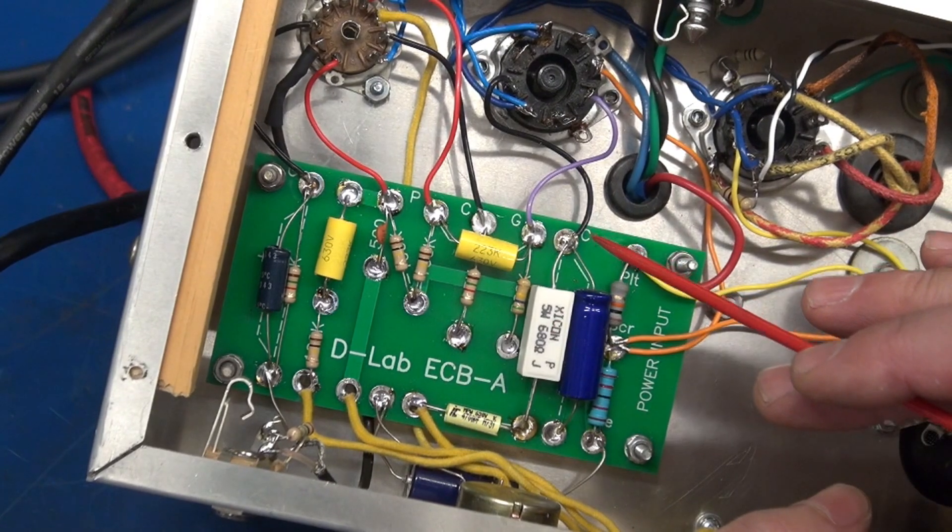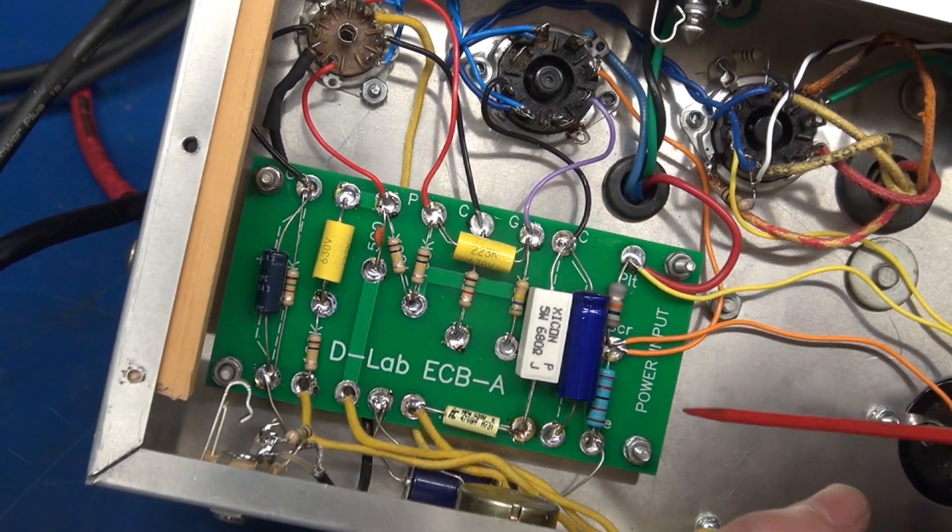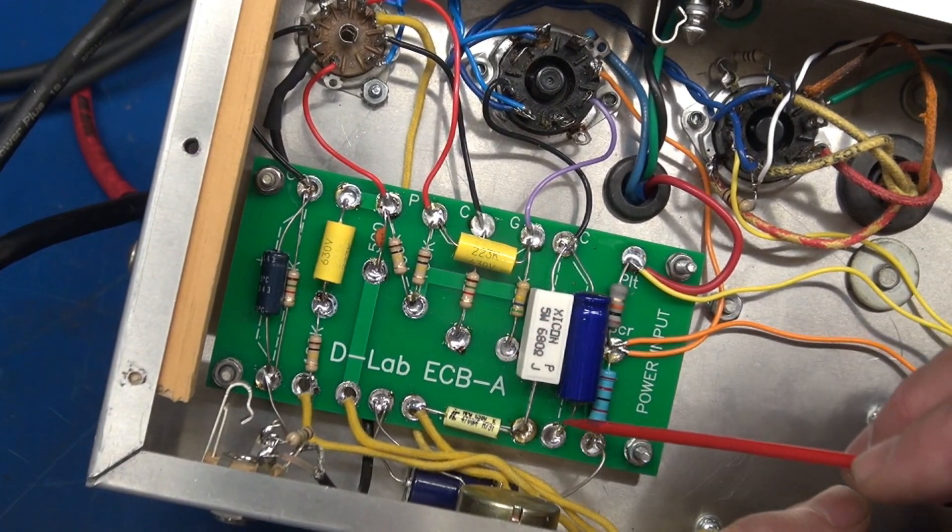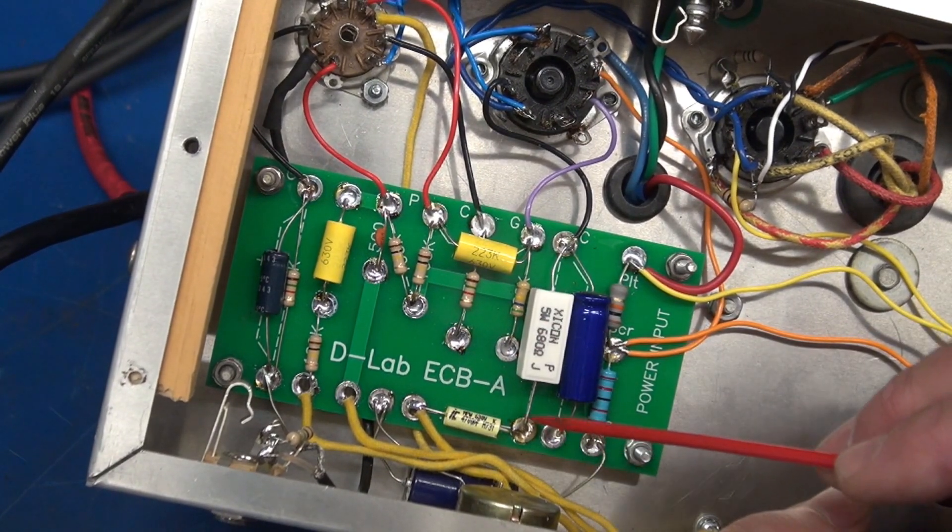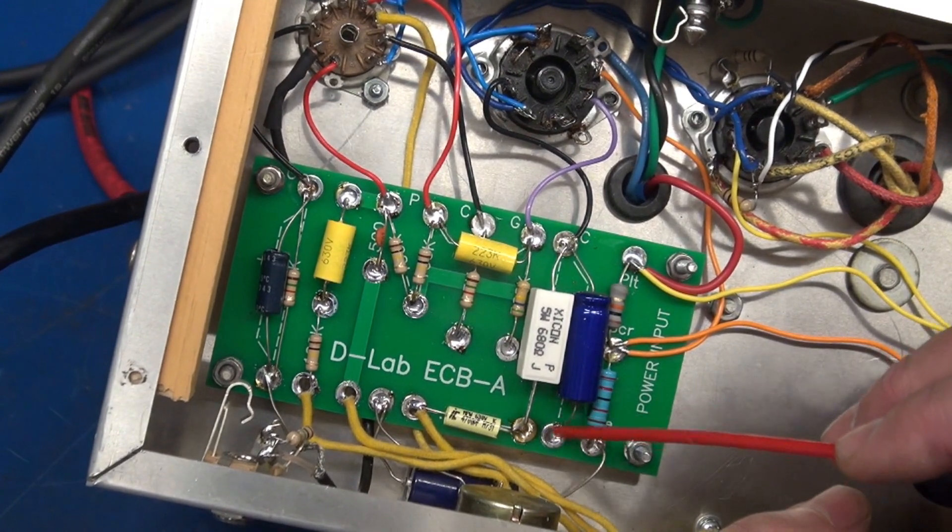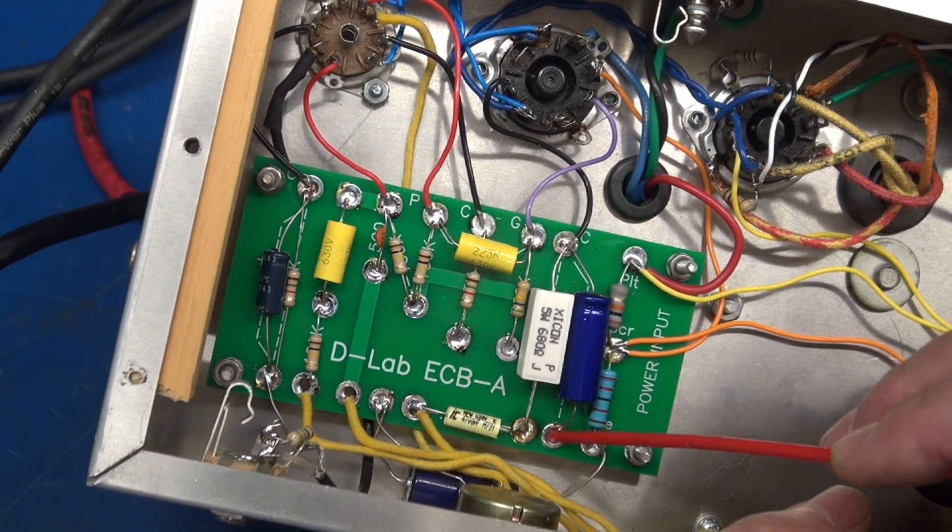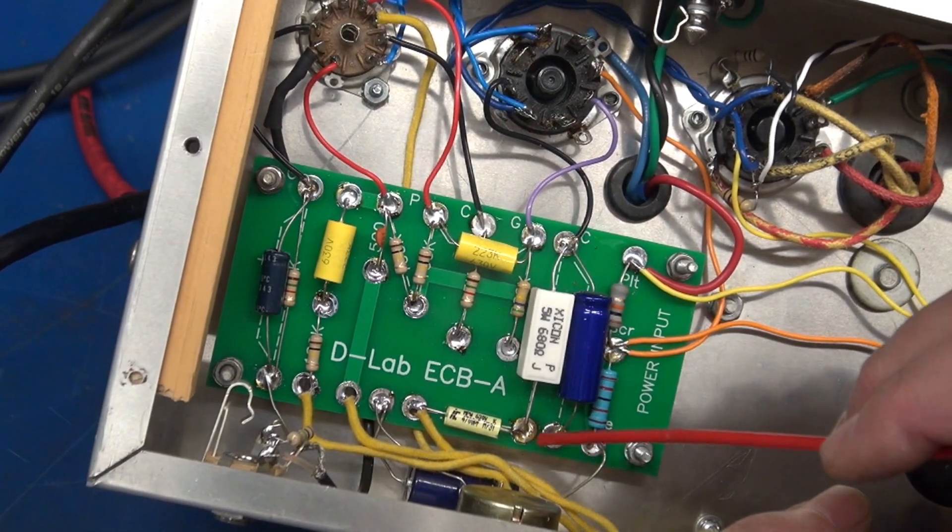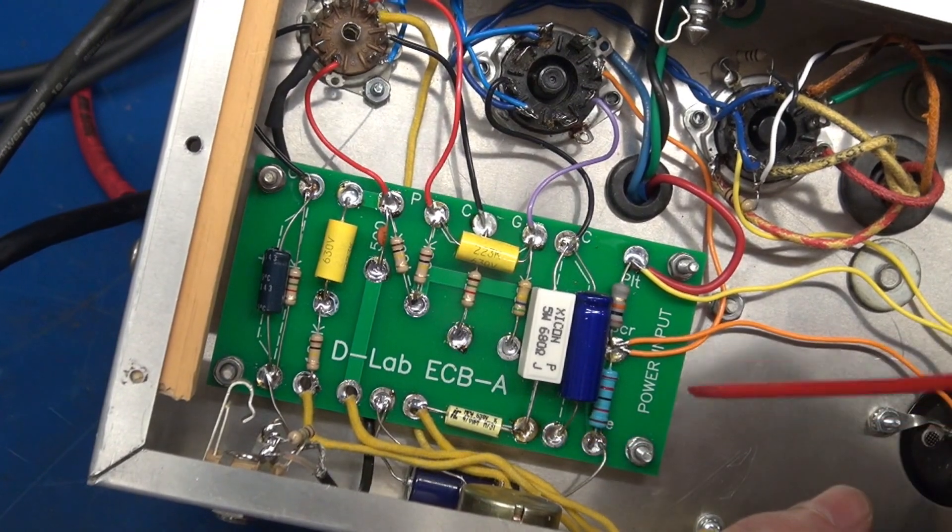I see this quite often on eyelet boards. Even though this is a D-Lab ECB-A board, it is still an eyelet design and the same problems can happen. Yes, I did sabotage this so I could demonstrate this problem for all of you. So what we're going to do now is re-solder this connection and test the amp.